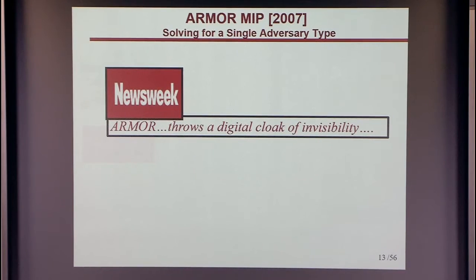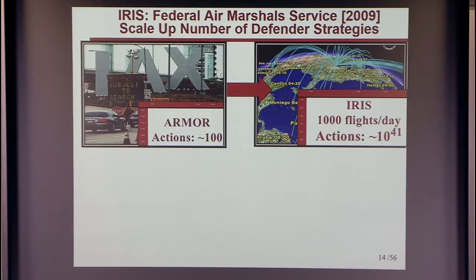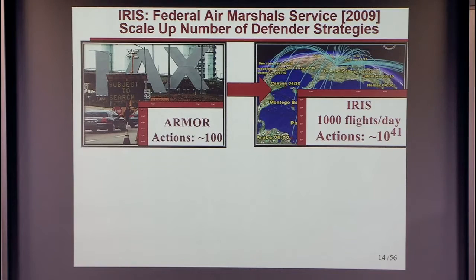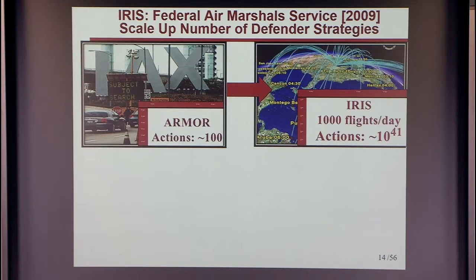The Federal Air Marshal Service's challenge is assigning air marshals to flights. While ARMOR had about 100 actions, IRIS needed to handle roughly 1,000 flights a day. With just 20 air marshals, the defender action space was 10 to the power of 41.